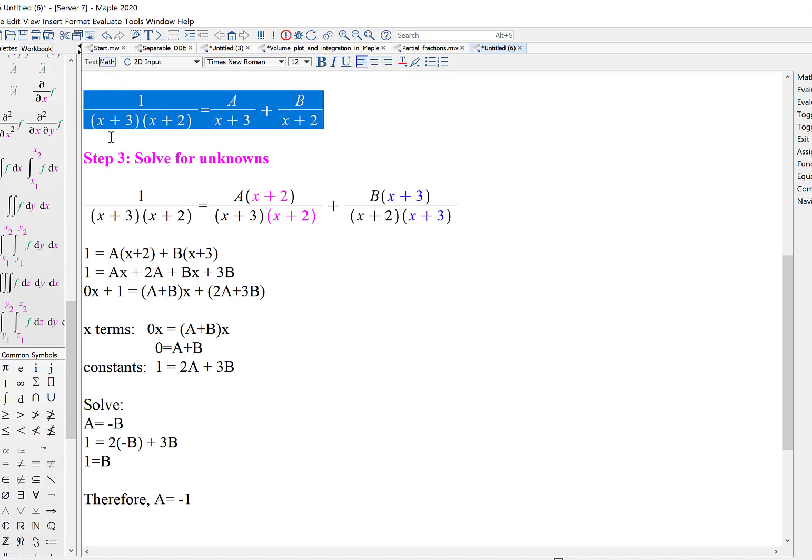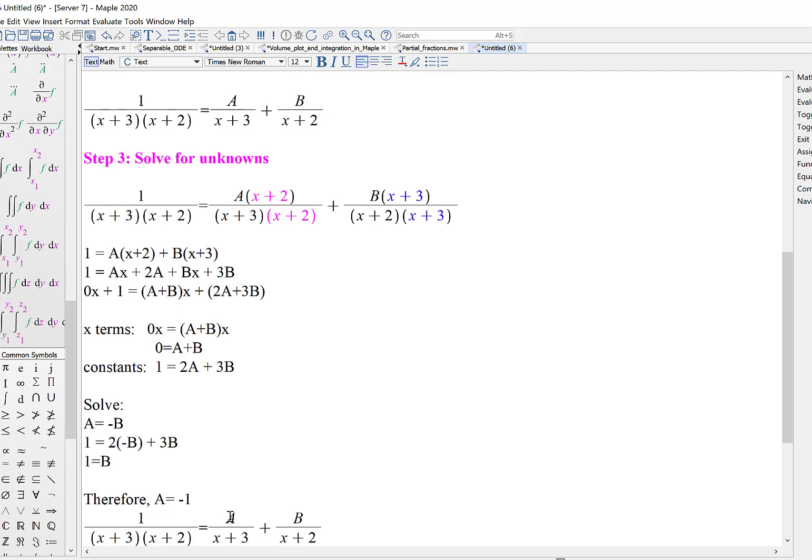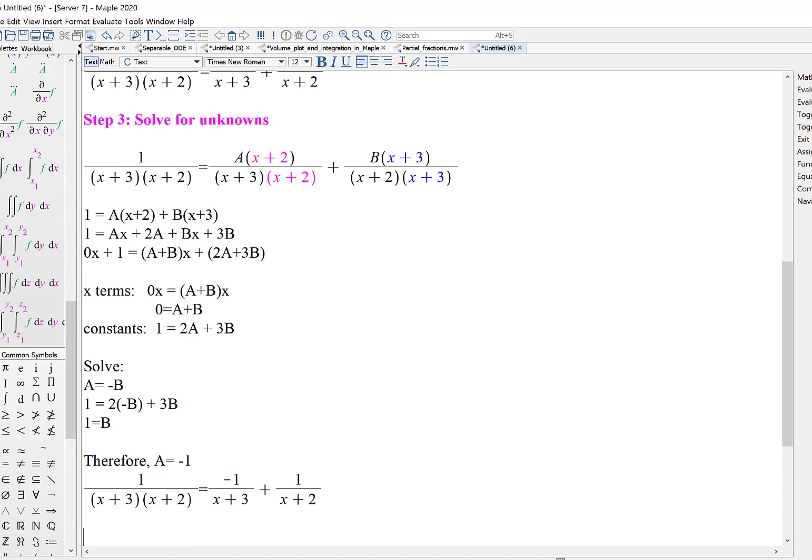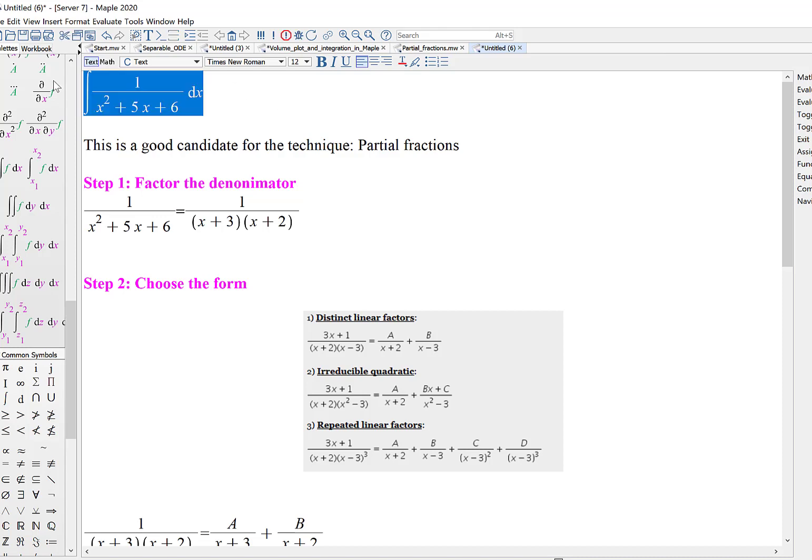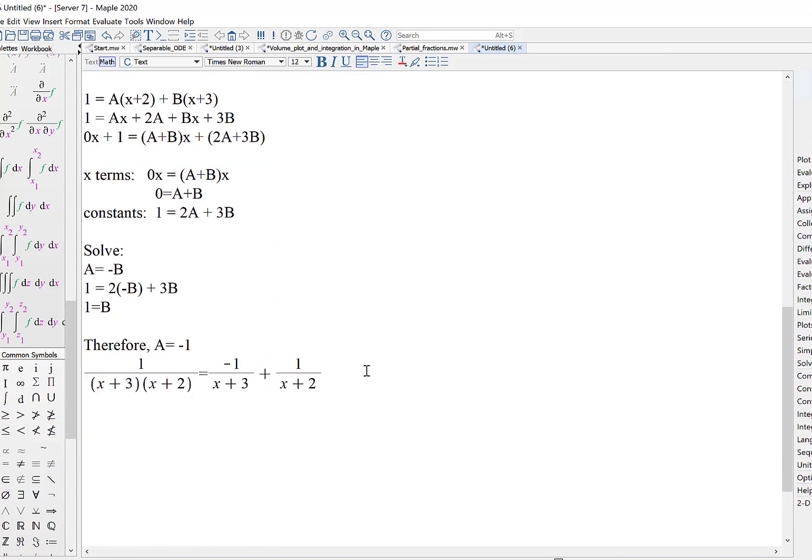So let's rewrite what we found. A is negative 1 and B is 1. And so now, in terms of integrating this problem, the integral would be the same as the integral of negative 1 over x plus 3 plus 1 over x plus 2. And I know that if I perform that, the antiderivative would be negative natural log absolute value of x plus 3 plus natural log absolute value of x plus 2 plus our constant of integration, C.